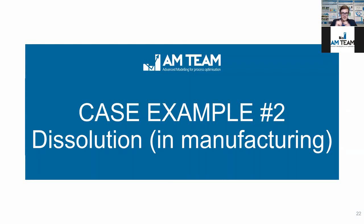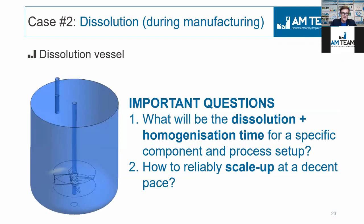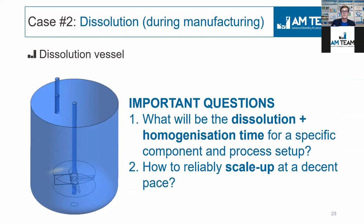This is dissolution in the manufacturing stage, not dissolution in the human body. This is a dissolution vessel with an impeller — a very simple system. You have a couple of manholes, a shaft, and the impeller. The very important questions are: first, what will be the dissolution and homogenization time for specific components in that specific setup? Because components or APIs change all the time and you cannot always use the same scale or the same setup. Second, how to reliably scale up at a decent pace and cost without a lot of trial-and-error testing.